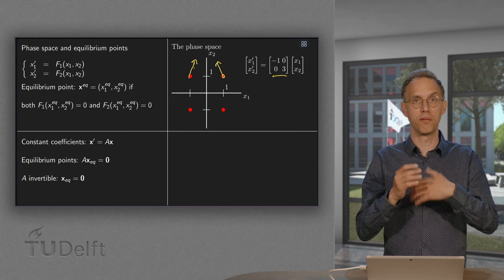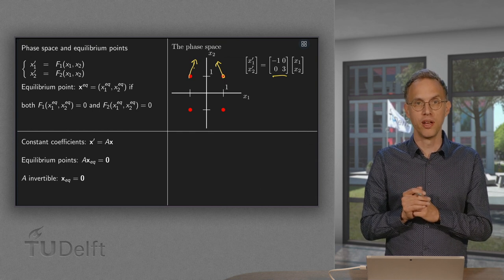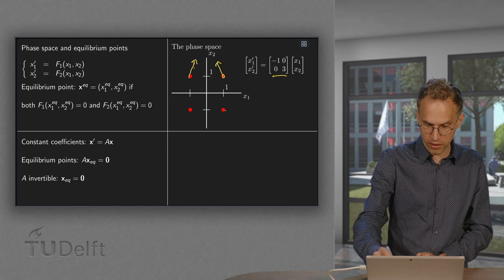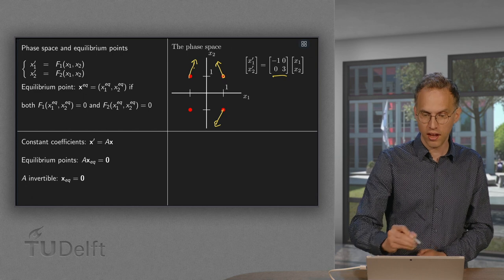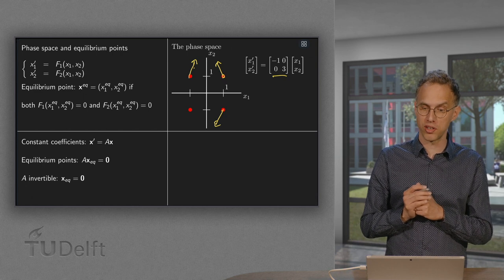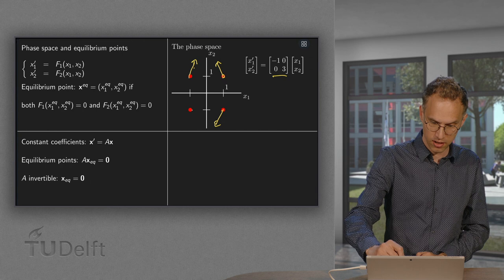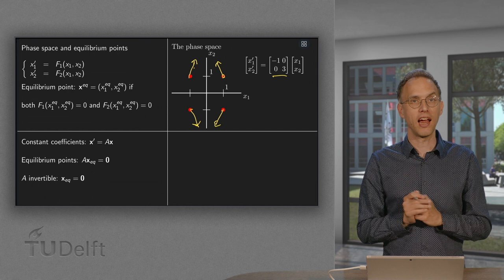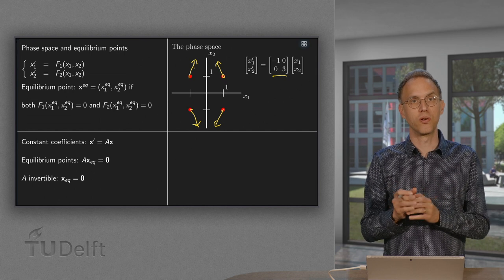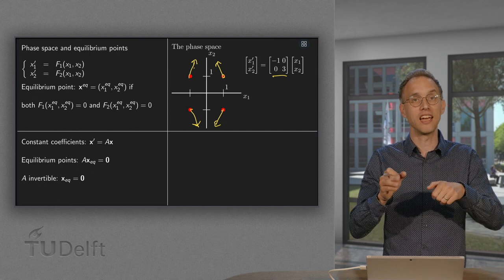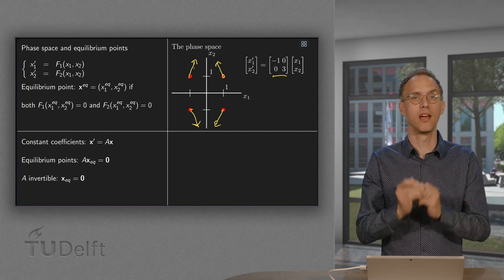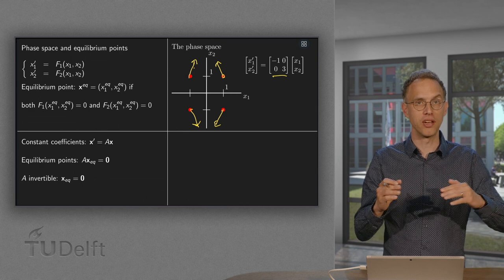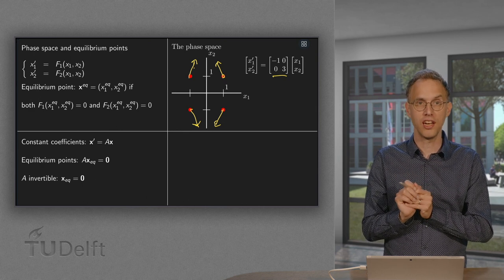We can do the same for many more points. This combination of all points with arrows indicating in which direction we are going is called the phase space. If you have enough arrows, you can visualize which direction the solution is going.